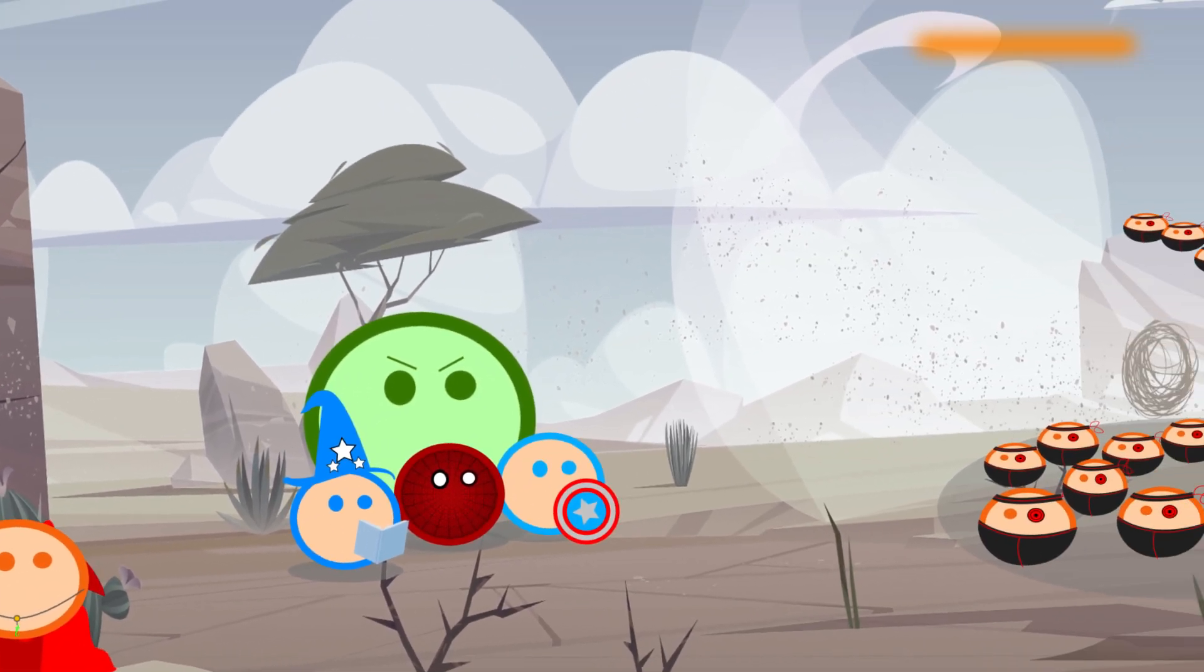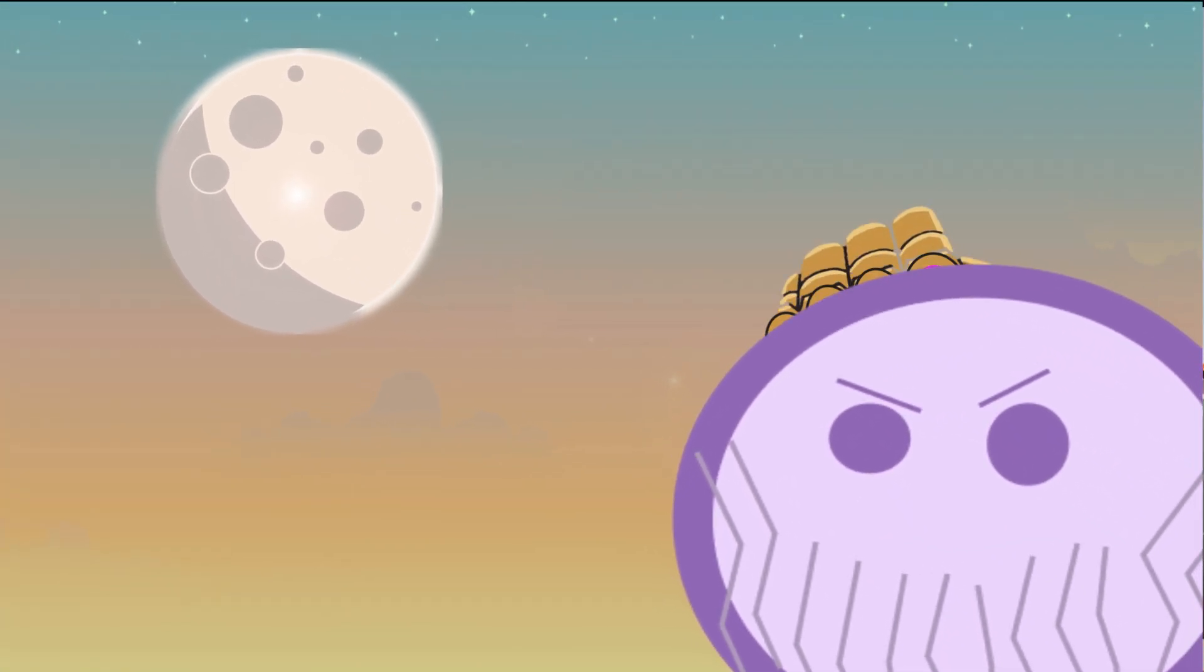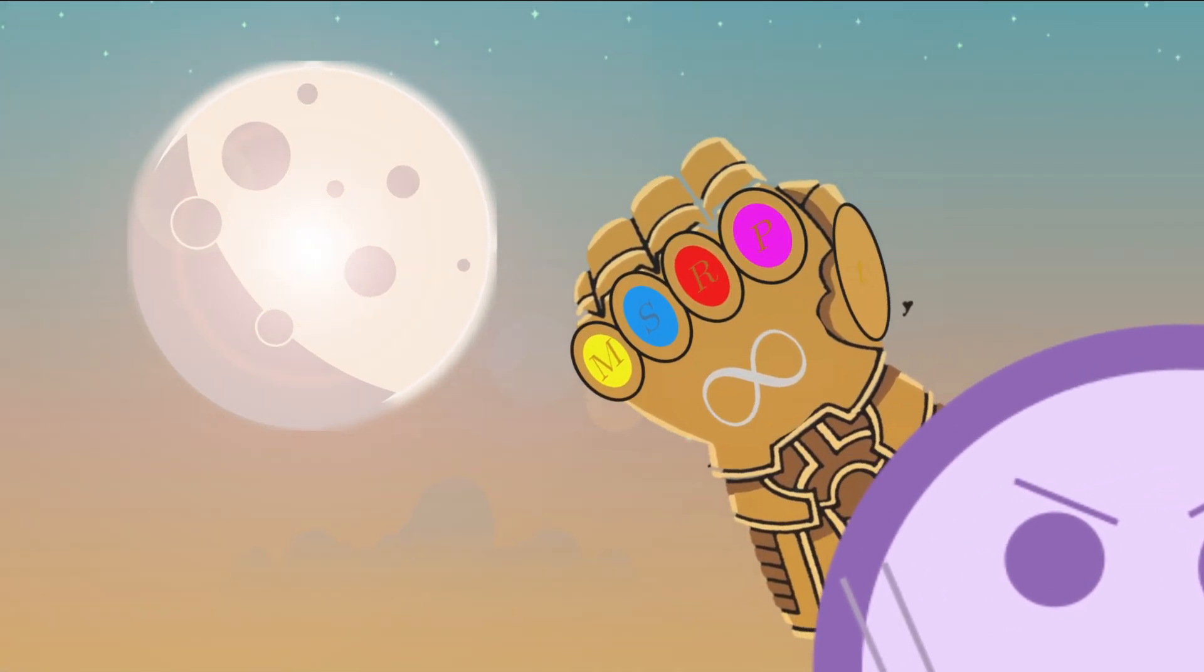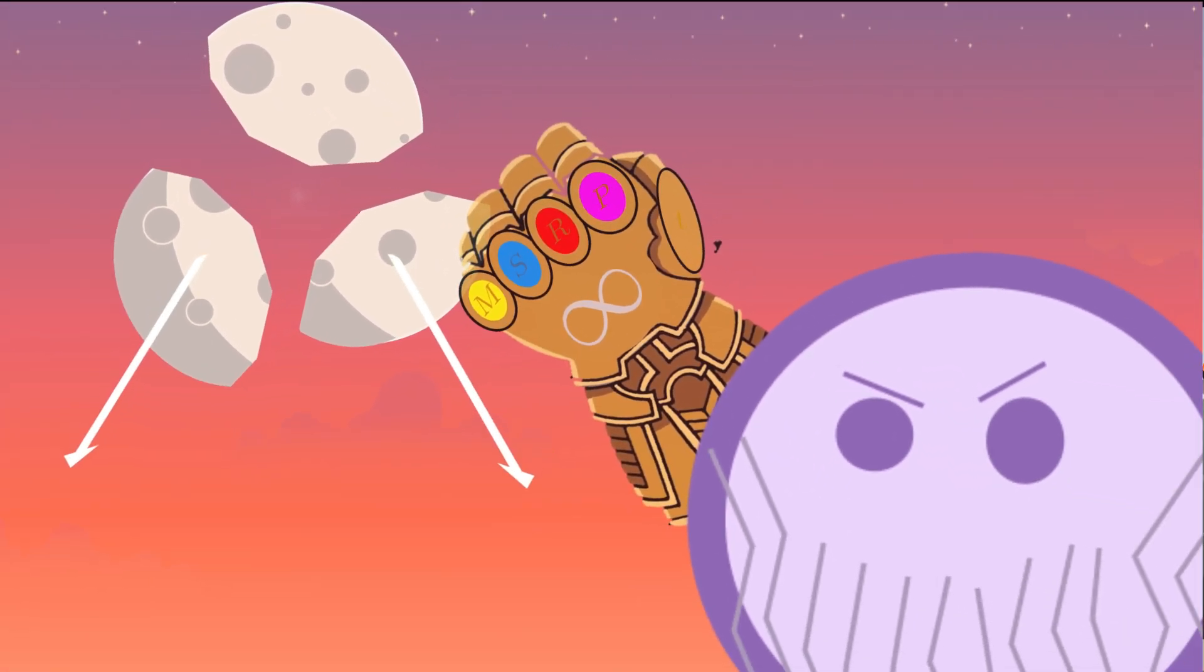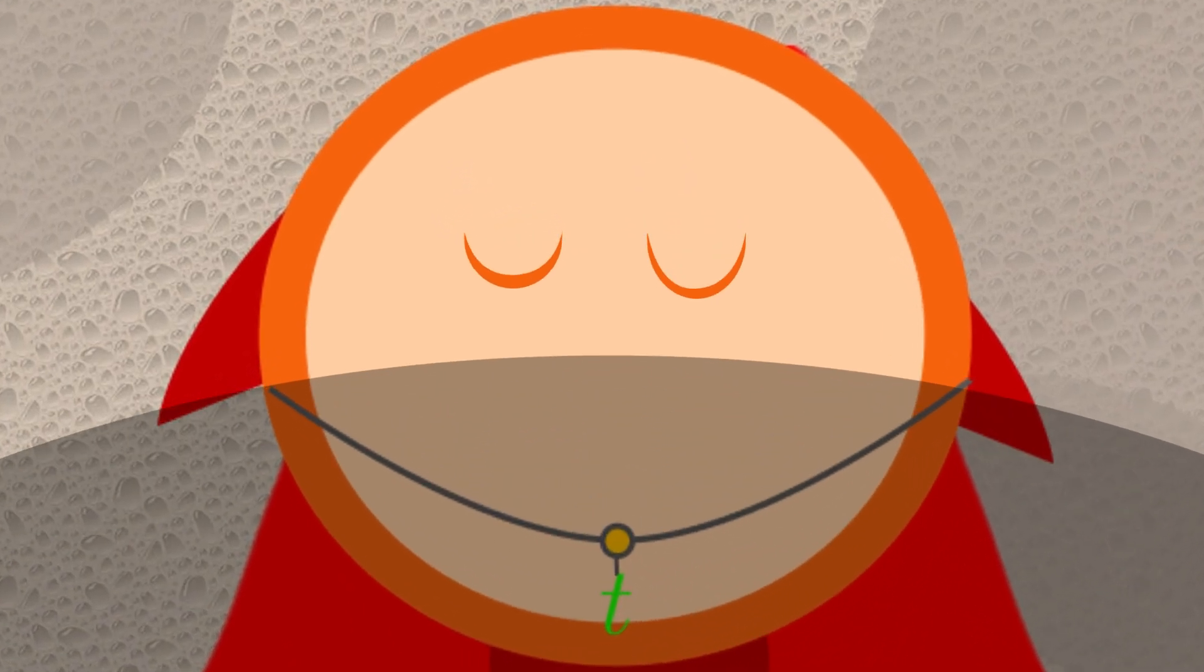So, you're a strange looking doctor witnessing Earth's mightiest heroes in action, when all of a sudden a gigantic purple being whips out a gauntlet with an infinity symbol on it and points it at the moon and yeets it at you. Now you, as calm as a feather, close your eyes and activate your time stone to take a trip into the past to learn about vectors.